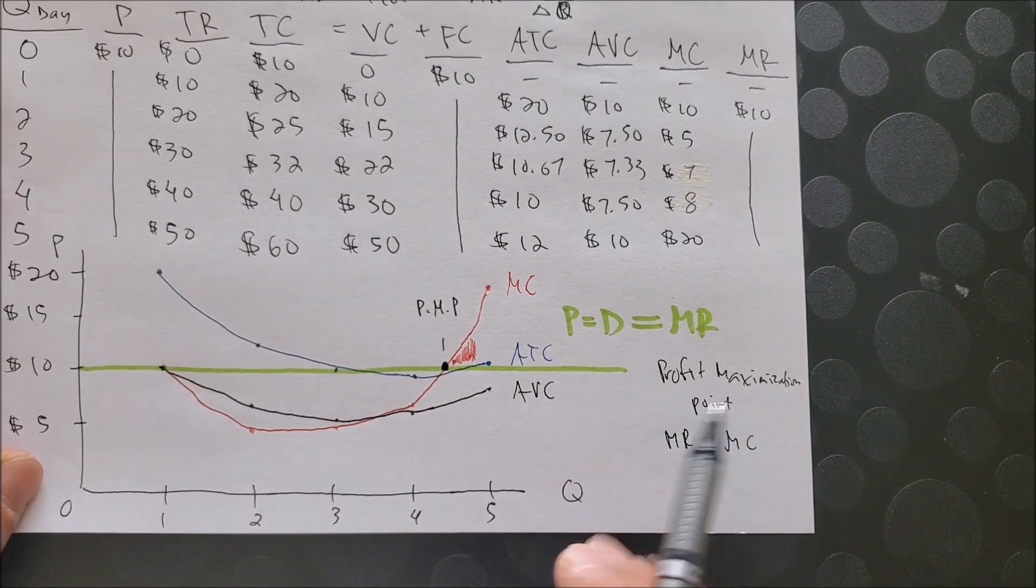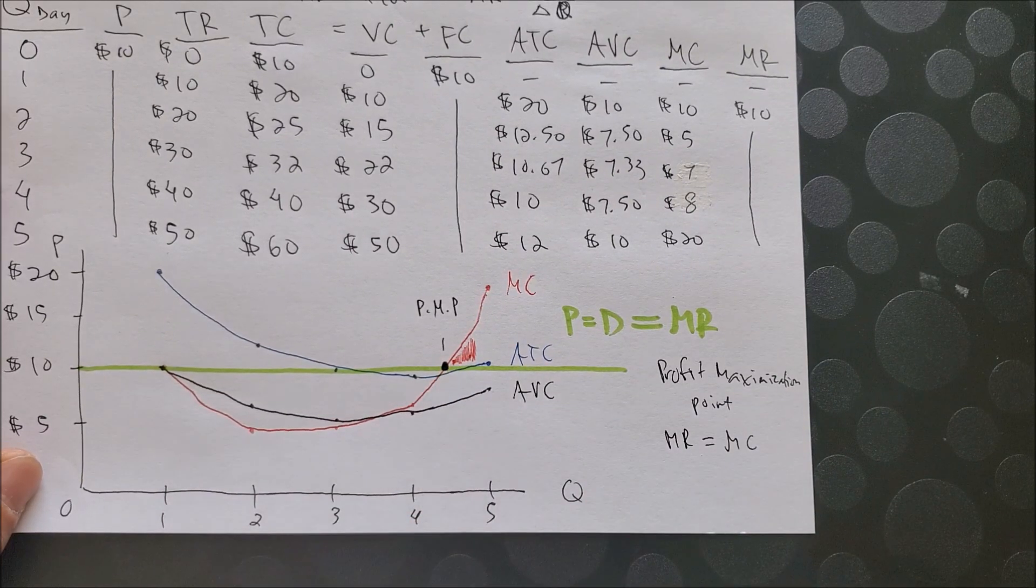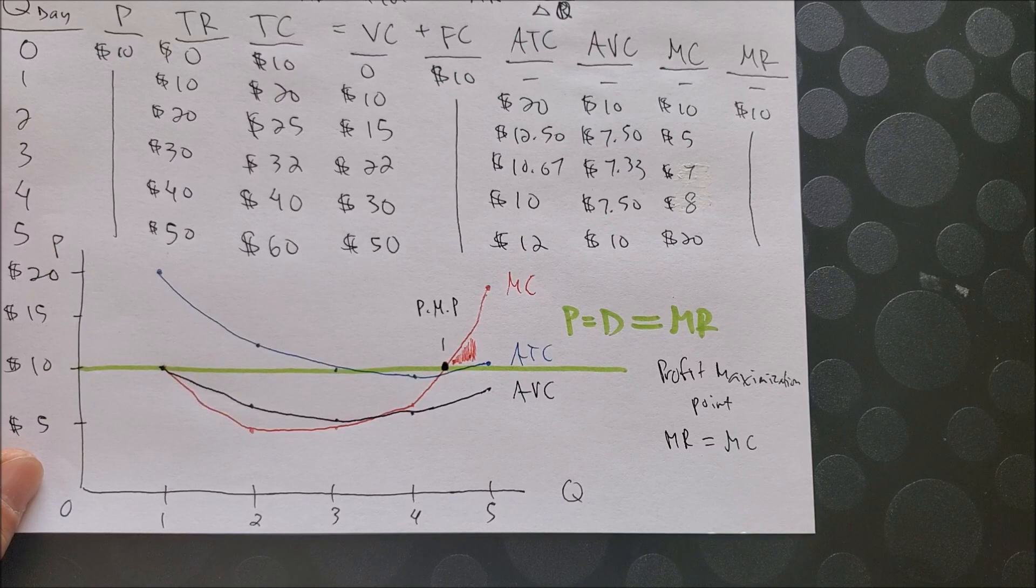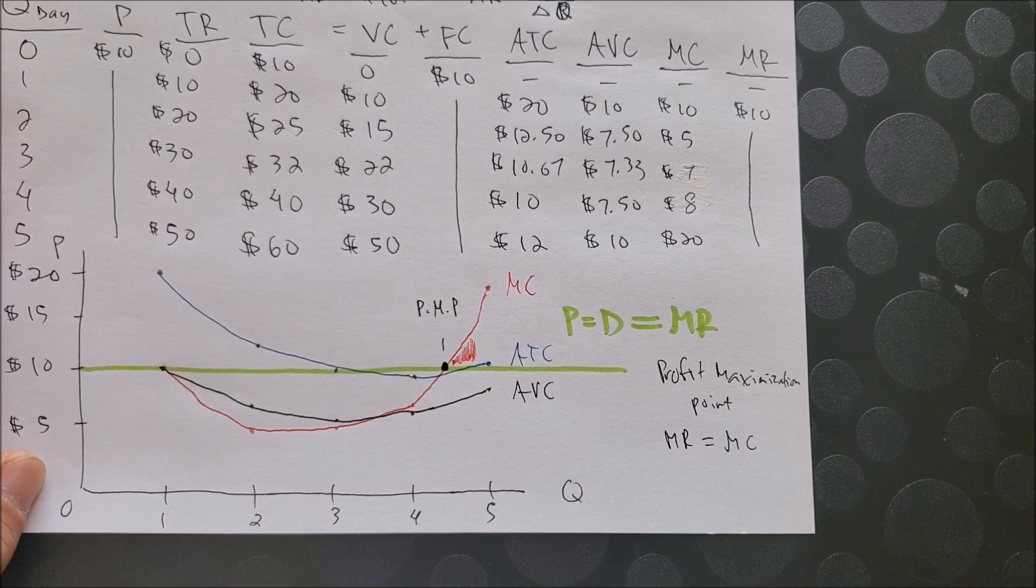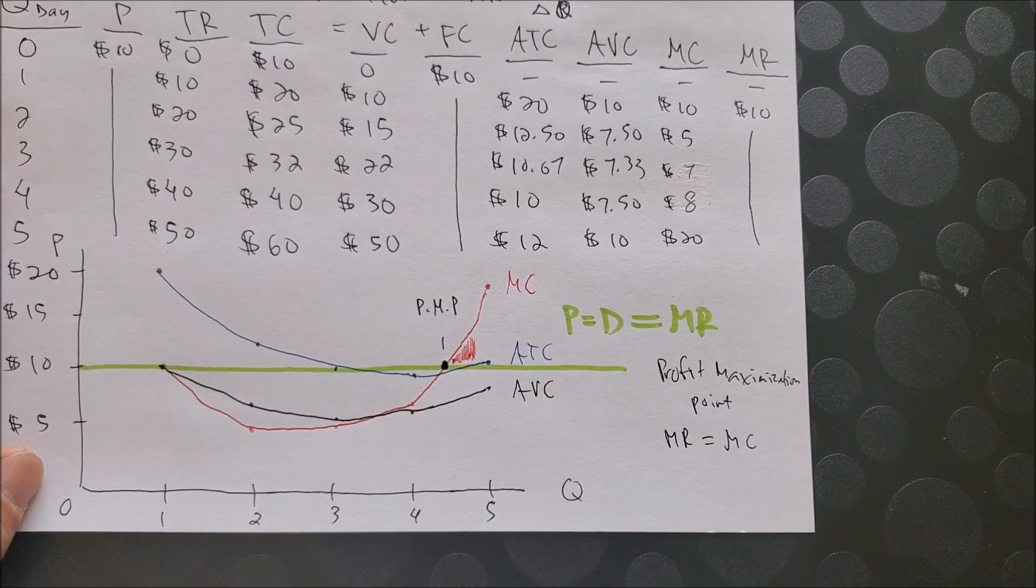So once you have found the profit maximization point, now the big question is, is this firm, is your mobile car wash, are you making any profit, any money?